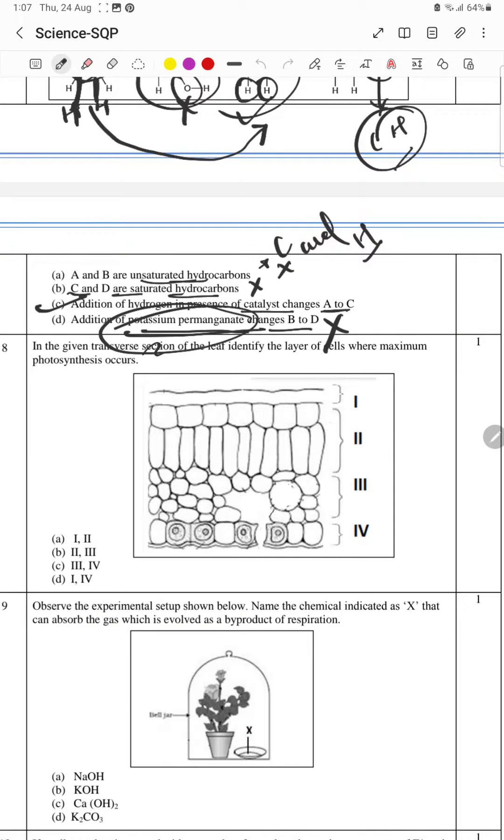In this question, in the given transverse section of the leaf, identify the layer of the cells where maximum photosynthesis occurs. Here we can see one is your epidermis.